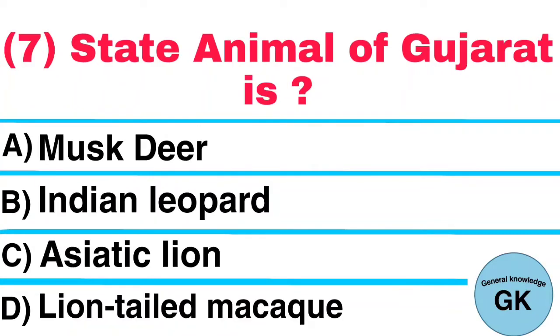Question Number 6. State Animal of Gujarat is: A. Musk Deer, B. Indian Leopard, C. Asiatic Lion, D. Lion-Tailed Macaque. Answer: Asiatic Lion.